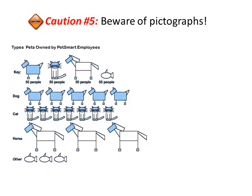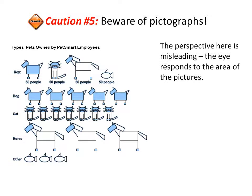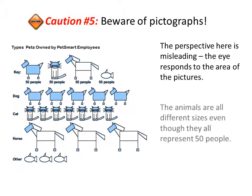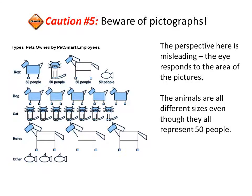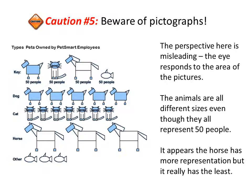For dogs, there are five dog icons, which means 250 PetSmart employees own dogs. The perspective here is misleading because the eye responds to the area of the pictures, not necessarily the number they represent. The animals are all different sizes even though they all represent fifty people, so it appears the horse has the most representation when it actually has the least. If you use a pictograph, make sure the figure or symbol is proportional to the value it represents.